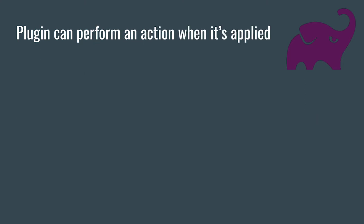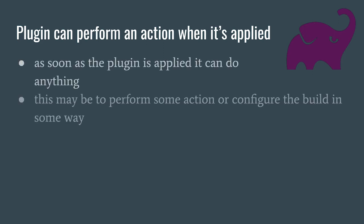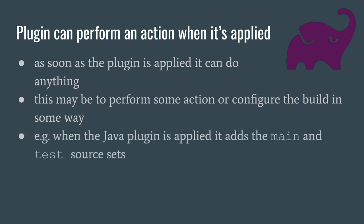Plugins can also perform some action when they're actually applied. As soon as a plugin is applied, it can do anything — perform some action or configure the build in some way. For example, if you apply the Java plugin, it automatically adds the main and test source sets, configuring your Gradle build in a specific way without you having to run an actual task.